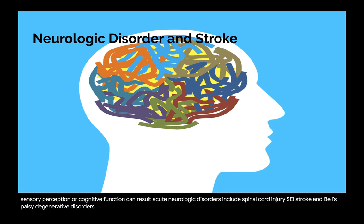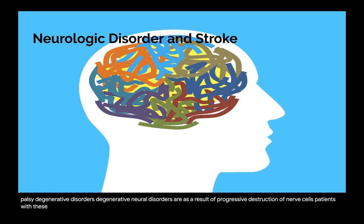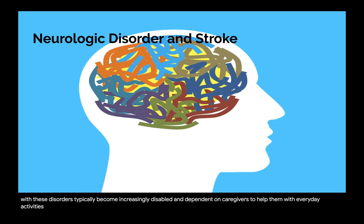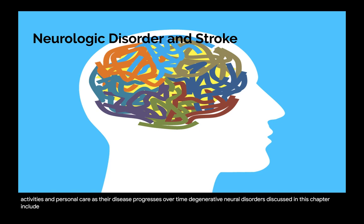Degenerative neural disorders are a result of progressive destruction of nerve cells. Patients with these disorders typically become increasingly disabled and dependent on caregivers to help them with everyday activities and personal care as their disease progresses over time. Degenerative neural disorders discussed in this chapter include amyotrophic lateral sclerosis (ALS), Parkinson's disease, and post-polio syndrome.